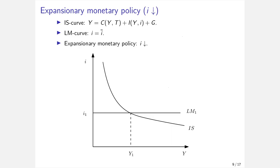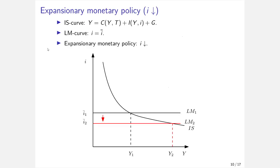In the case of expansionary monetary policy, the central bank decreases the interest rate in the hope of boosting firm investment, because loans become cheaper, inducing higher investment and therefore higher output and income. When the central bank decreases the interest rate, the IS curve does not change, but the LM curve shifts downwards. We then have a new equilibrium at the intersection of the old IS curve with the new LM curve — at a higher level of income and output, but a lower interest rate.